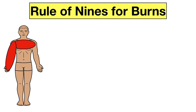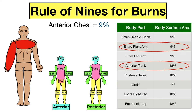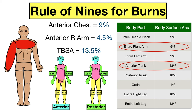Let's look at a couple of examples. The first patient has partial thickness burns involving the entire anterior chest and the entire anterior right arm. The anterior trunk is 18%, and since this burn only involves the chest and not the abdomen, that's half of the anterior trunk — so the anterior chest is 9%. The entire right arm is 9%, and since this burn only involves the anterior aspect, it's 4.5%. So this patient with partial thickness burns to the anterior chest and anterior right arm involves a total body surface area of 13.5%.